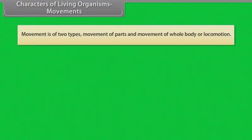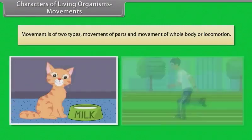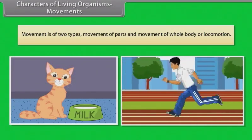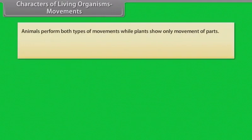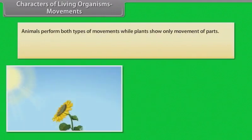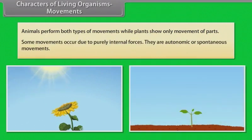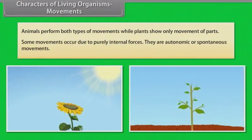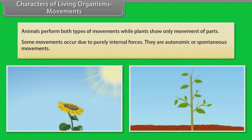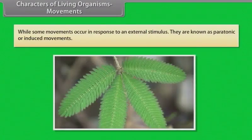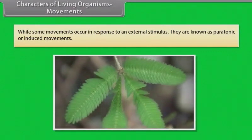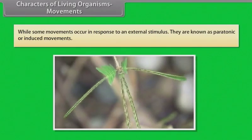Movement is of two types: movement of parts, and movement of the whole body, or locomotion. Animals perform both types of movements, while plants show only movement of parts. Some movements occur due to purely internal forces — these are autonomic or spontaneous movements. Some movements occur in response to an external stimulus — these are known as paratonic or induced movements.